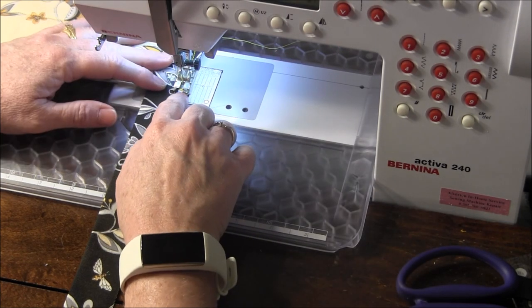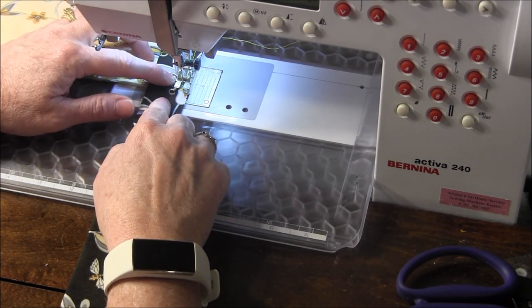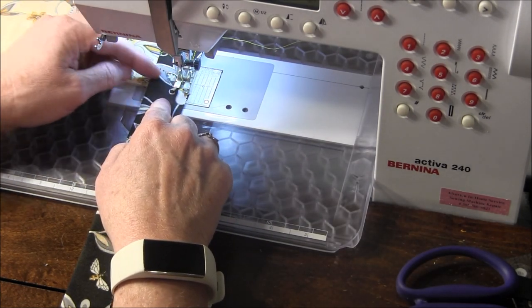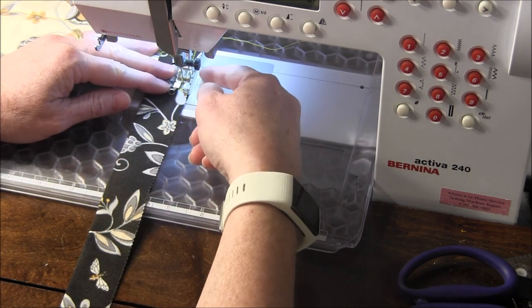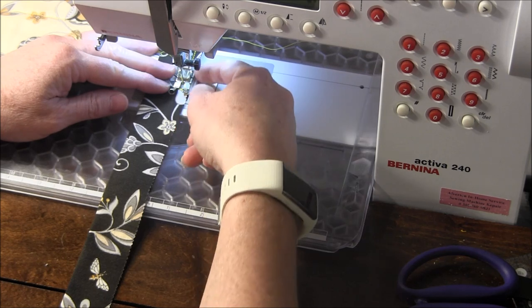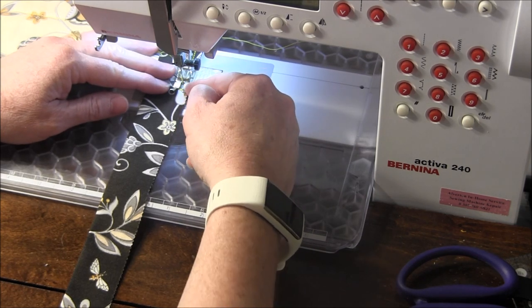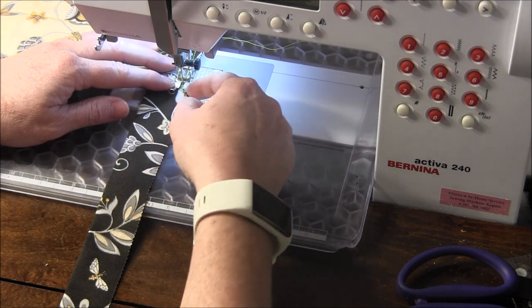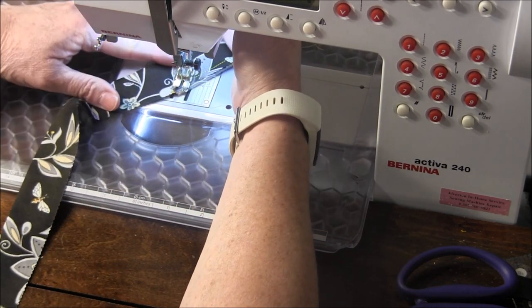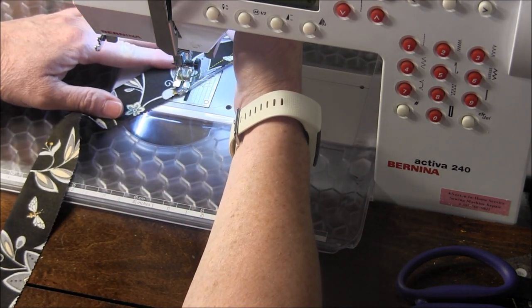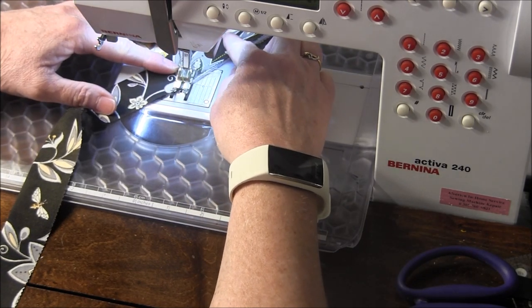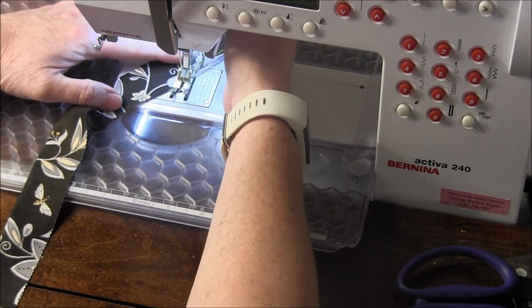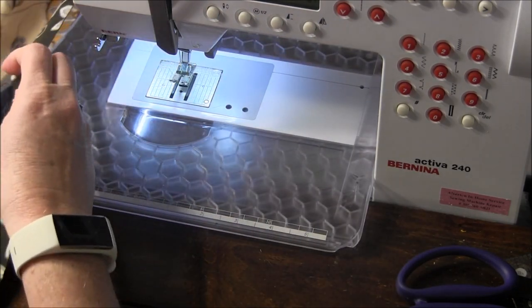When we get to this corner, stop one quarter inch from the end, from the edge of the mug rug. My foot here has marks on it for a quarter inch, so it's very helpful for this. It has three marks so I can tell when I'm a quarter inch from the edge. Turn, pivot and turn and sew into the corner. This is how we're going to make our mitered corners.